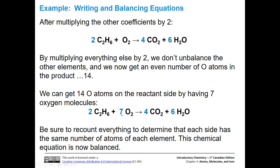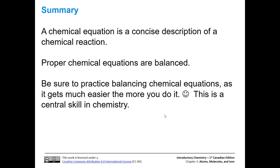Once we add our seven coefficient, let's check everything. Two times two is four carbons; two times six is 12 hydrogens; and we have 14 oxygens on the reactant side. On the product side: four carbons, eight plus six equals 14 oxygens, and 12 hydrogens. Everything is balanced — the same number of each type of element on both sides. A chemical equation is a concise description of a chemical reaction. Proper chemical equations are always balanced. Practice balancing chemical equations using your textbook and homework — the more you do it, the easier it gets. It is a central skill in chemistry.